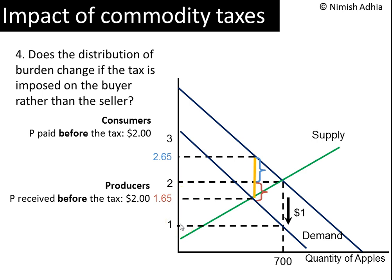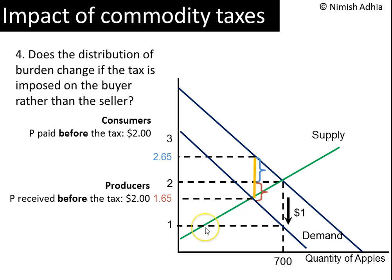Why is that? Recall that the height of the demand curve at any quantity tells us the maximum price that consumers are willing to pay to the producers. Because now consumers have to pay $1 to the government, the maximum price that they are willing to pay to the producers decreases by exactly $1. If consumers insist on paying the producers less than before at the old equilibrium quantity of $700, it will lead to a shortage because at the low price of $1, the quantity supplied is less than $700.